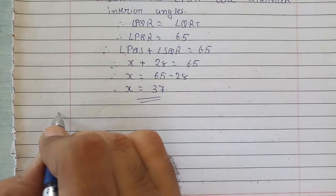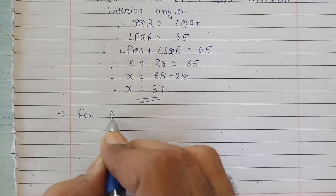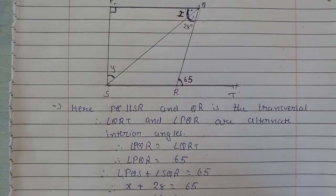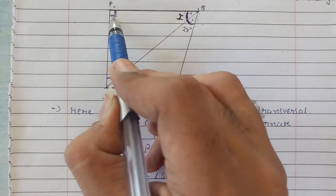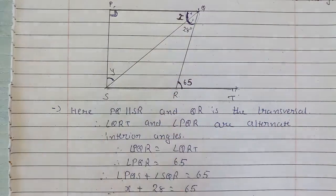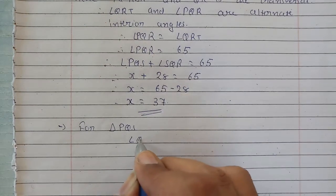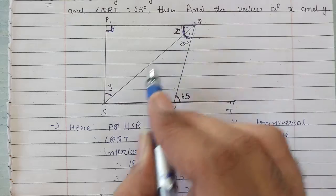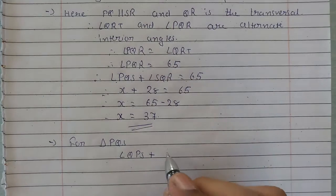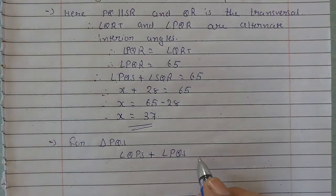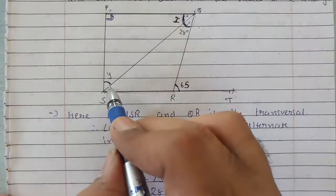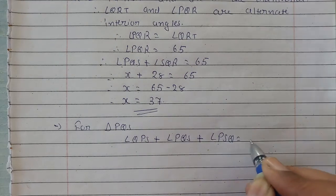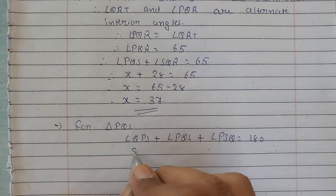For triangle PQS, angle QPS plus angle PQS plus angle PSQ is equal to 180. Now QPS is 90 degrees, PQS is x which we found to be 37, and PSQ is y.